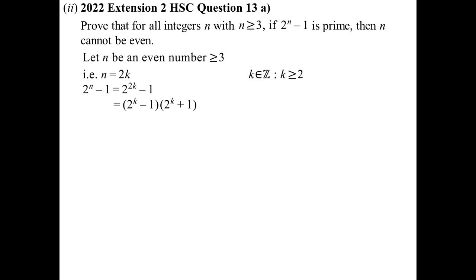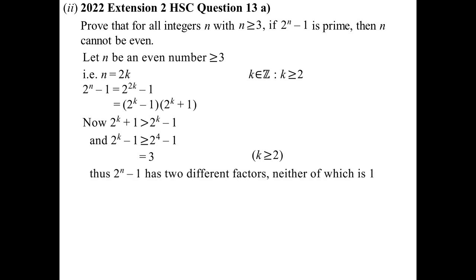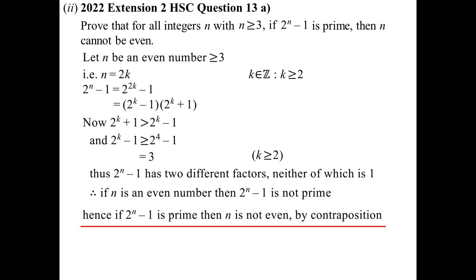We know 2^K + 1 is bigger than 2^K − 1, and 2^K + 1 can't be 1 since you're adding to 1. Now 2^K − 1 must be greater than or equal to 2^4 − 1 = 3, because K is greater than or equal to 2. So it's at least 3, meaning it has two different factors, neither of which is 1 — so it's composite. Therefore, if N is even, 2^N − 1 is not prime.